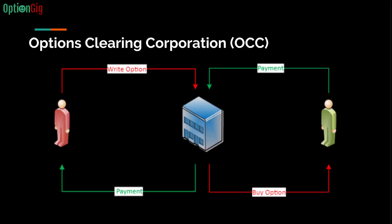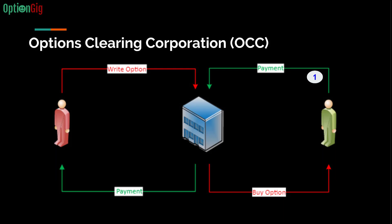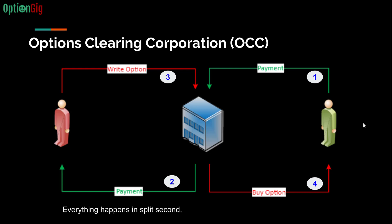Here's how the overall process works. When a buyer wants to buy a particular option, they send a payment to OCC, which sits in the middle. OCC directs that payment to the seller. The seller writes the option contract and sends it to OCC. OCC then passes the option contract to the buyer. So: buyer sends payment → OCC forwards payment to the option writer → writer creates the contract → contract is delivered to the buyer. Everything happens electronically in a split second.